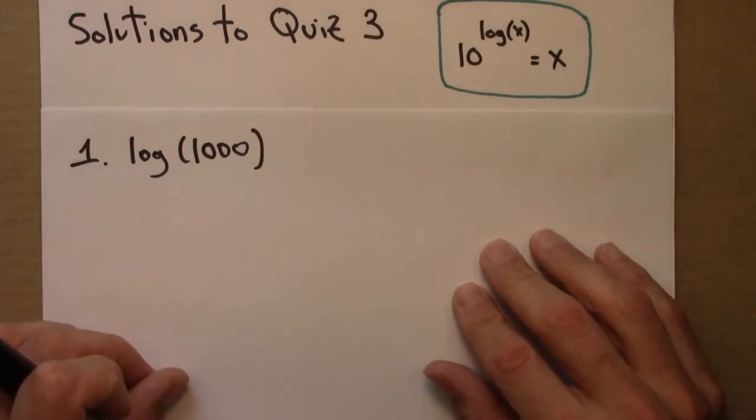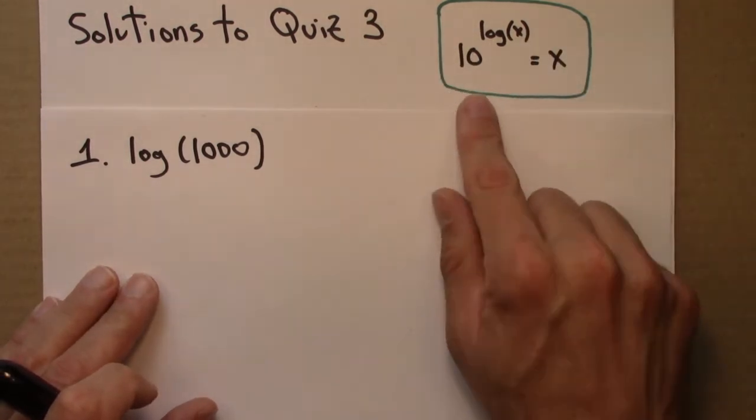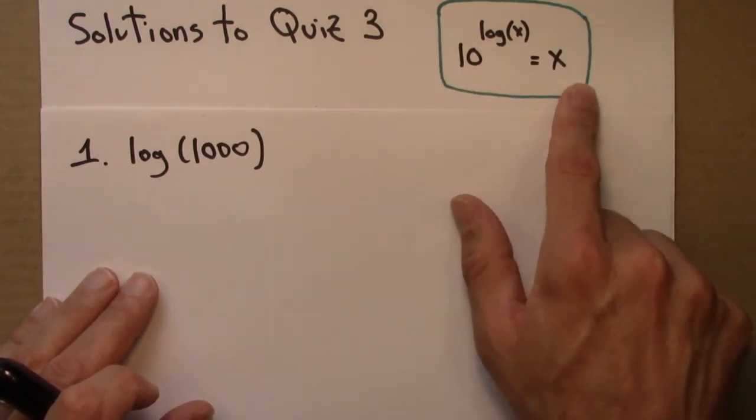So here are solutions to quiz 3. I'll answer all of these questions, but always going back to this relationship: 10 to the log x equals x.